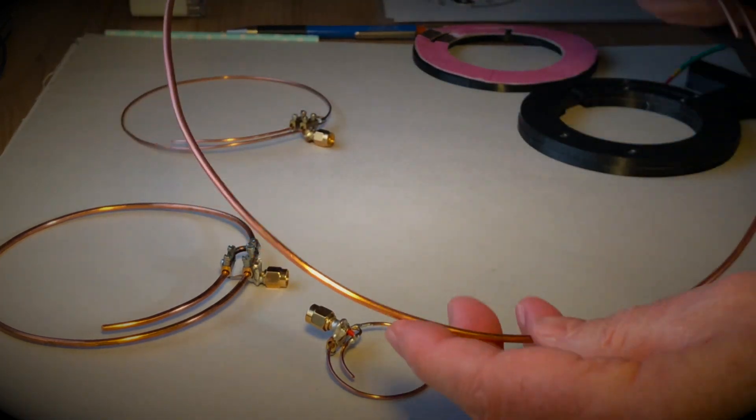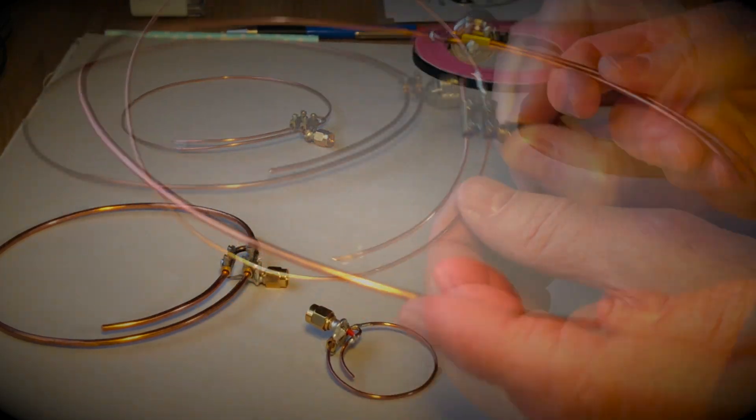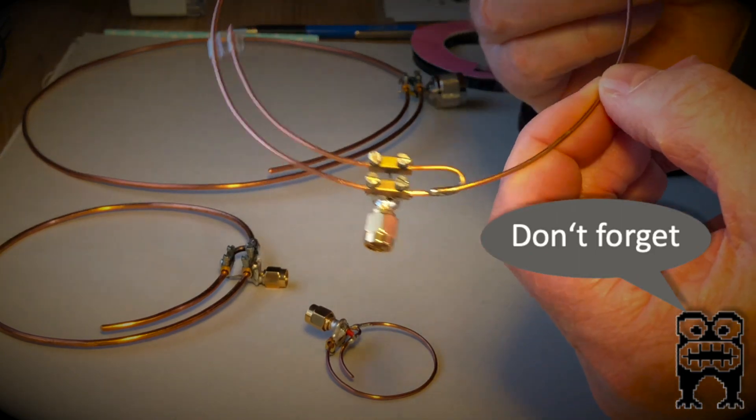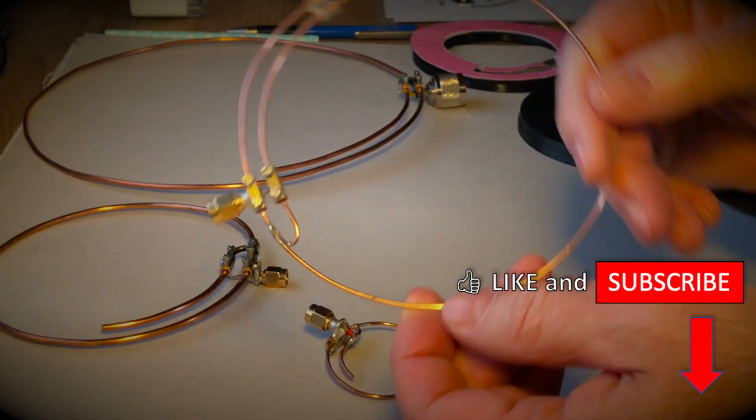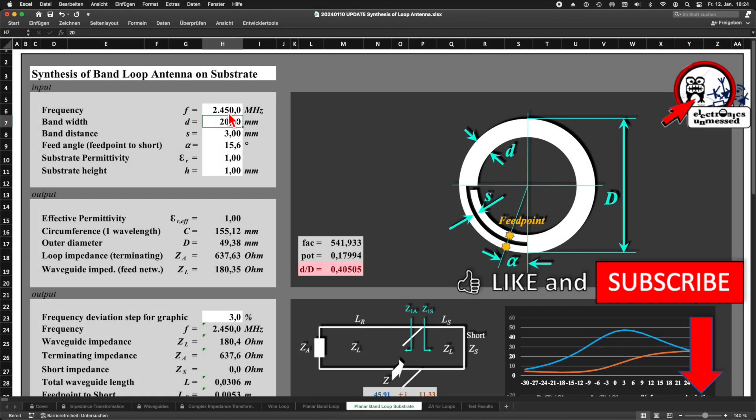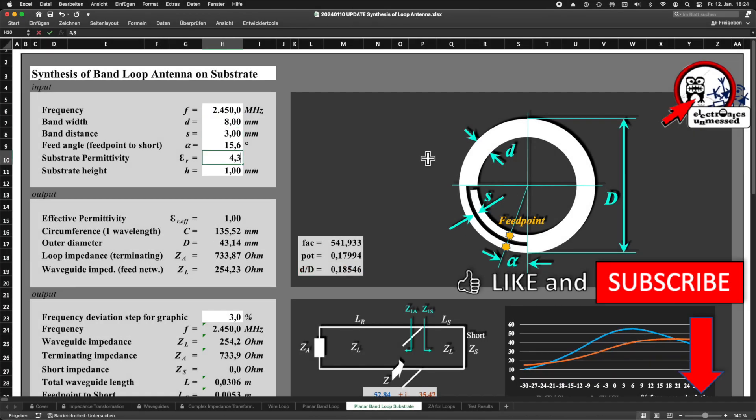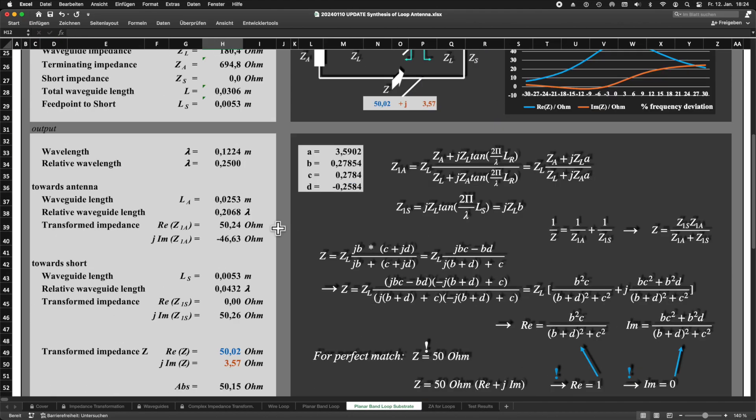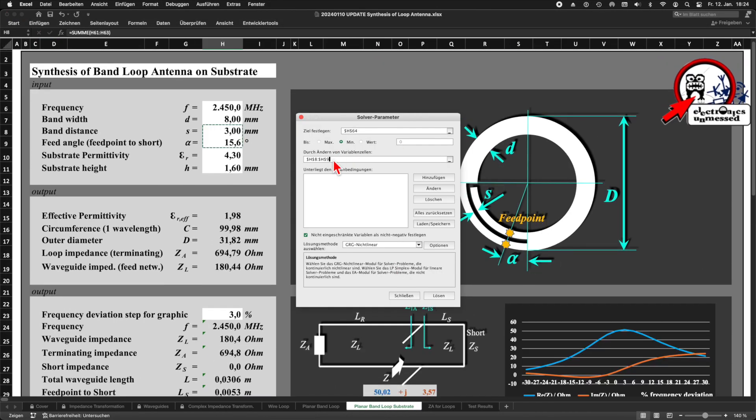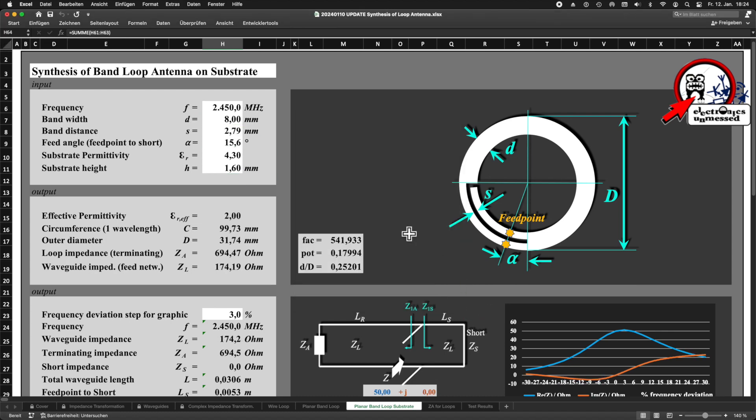In the meantime, I shared a number of videos where I analyzed, measured and tuned the antennas. I recommend these because there were a lot of new insights given. Some time ago I presented an Excel dimensioning tool, with which I designed the antenna for 2.4 GHz, 866 MHz and 435 MHz myself.